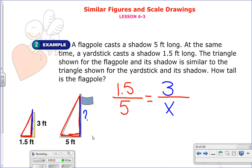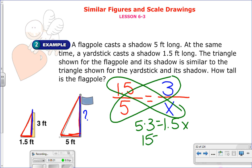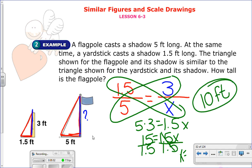And we solve. Well, 5 times 3 is the same as 1.5 times x. So I'm going to simplify it and get 15 is the same as 1.5x. To get x by itself, we divide by 1.5. And I get x is, well 15 divided by 1.5 is 10. So here, the height of the flagpole is 10 feet. There we go. So again, you used a proportion in order to solve it.